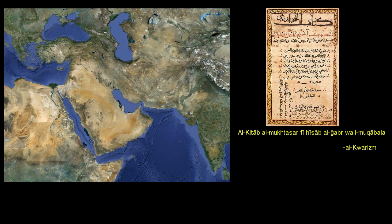What I want to do in this video is think about the origins of algebra. The word, especially in association with the ideas that algebra now represents, comes from this book — actually this is a page of the book right over there. The English translation for the title is 'The Compendious Book on Calculation by Completion and Balancing.' It was written by a Persian mathematician who lived in Baghdad, in the 8th or 9th century — I believe it was actually 820 A.D.